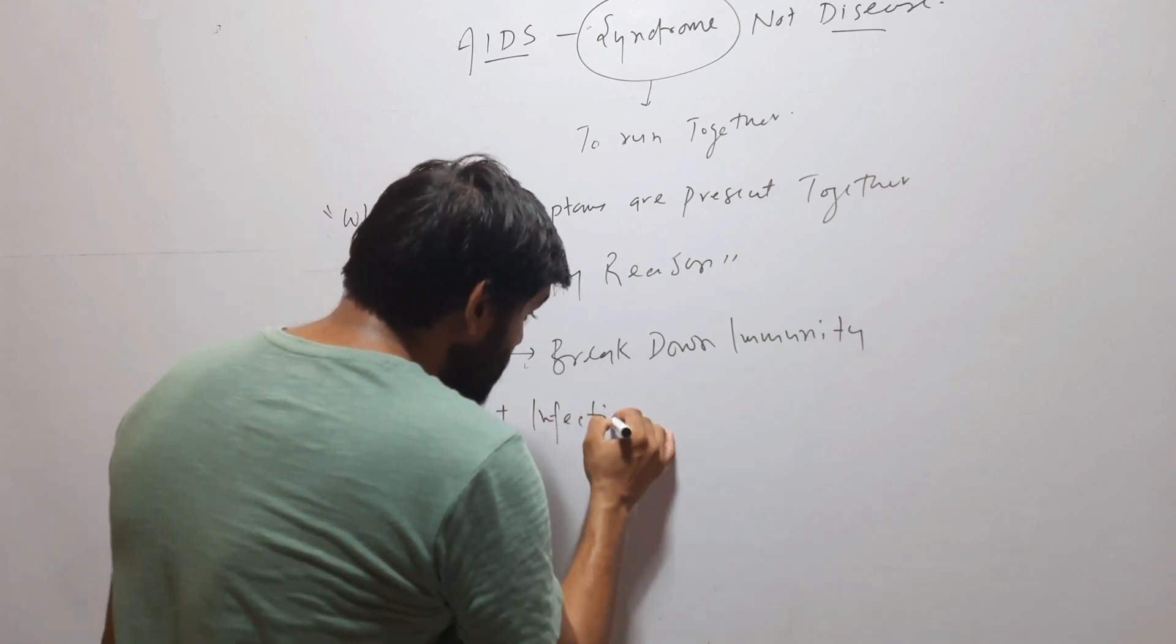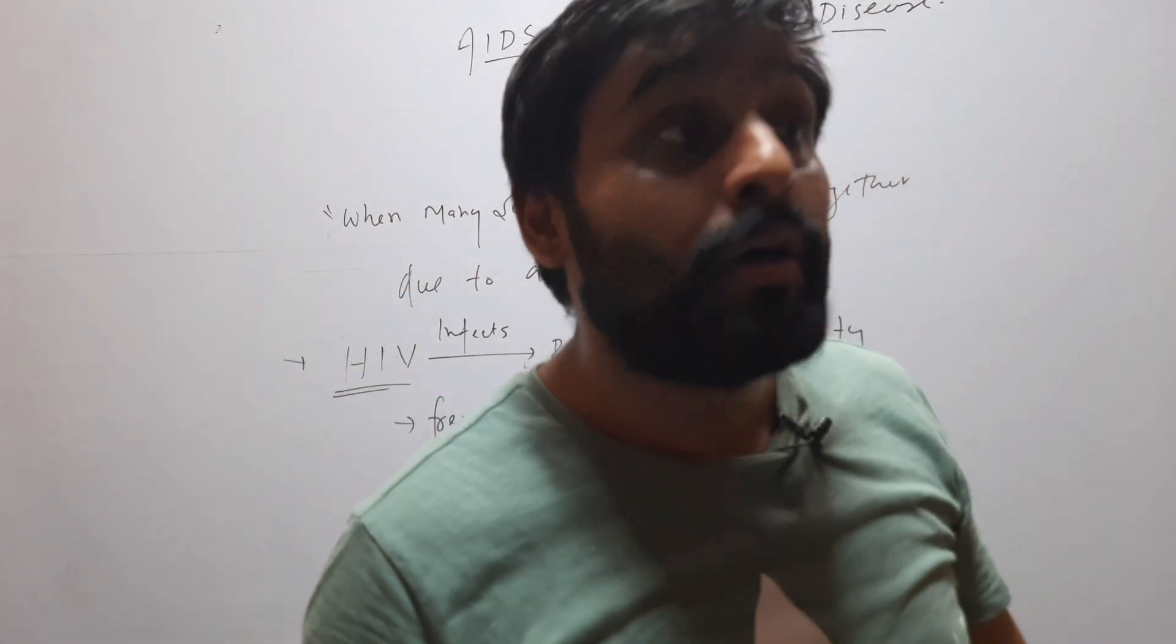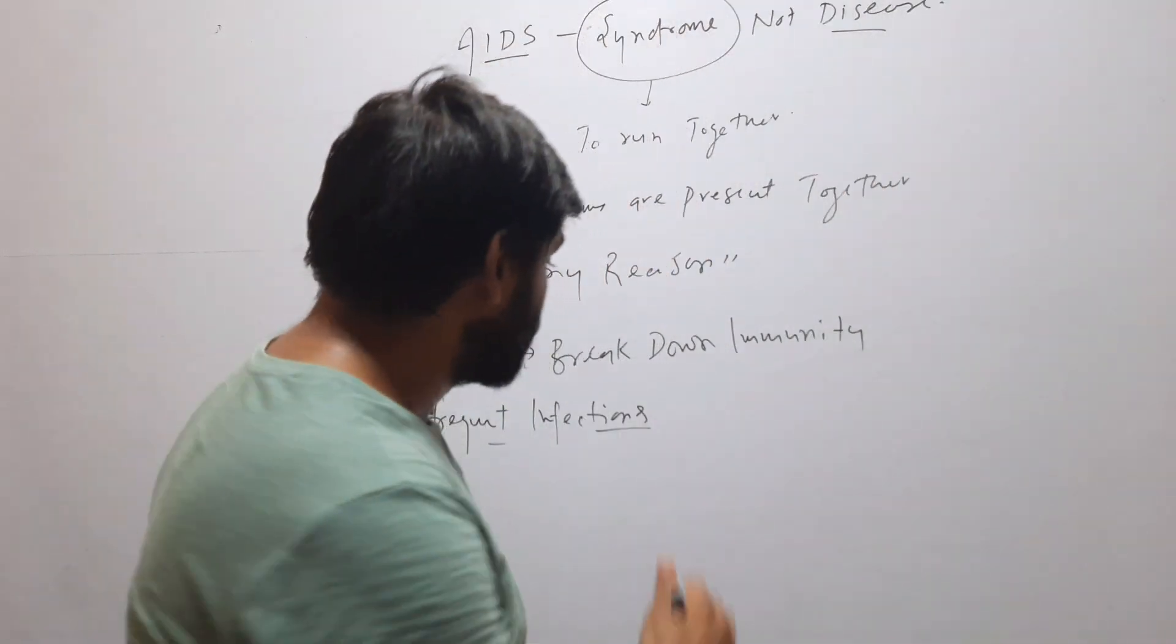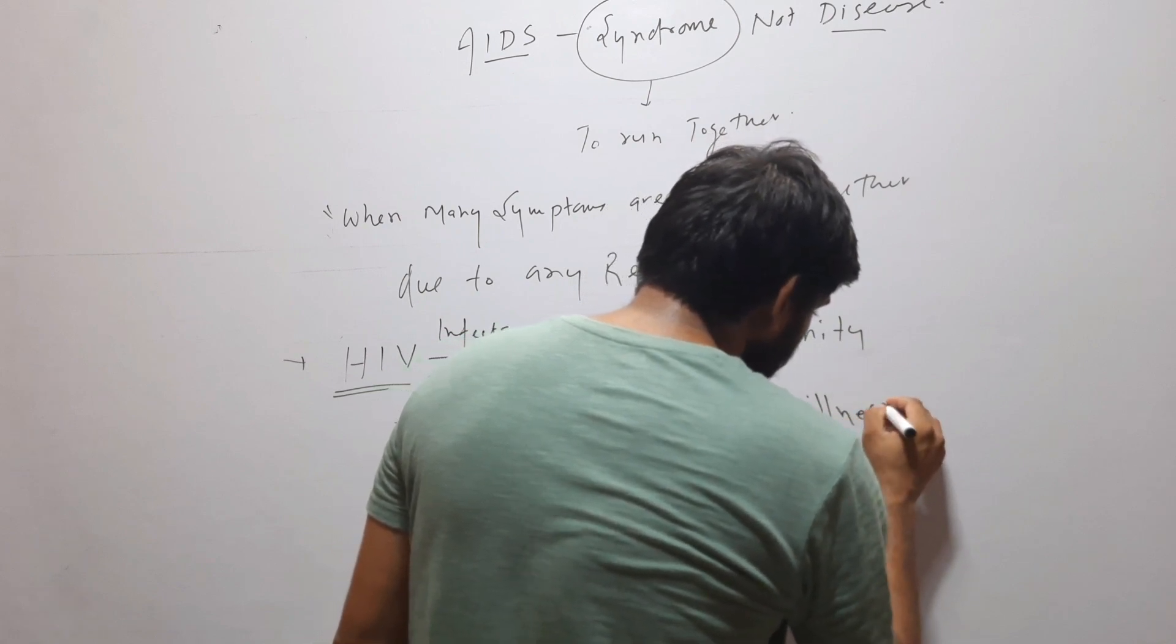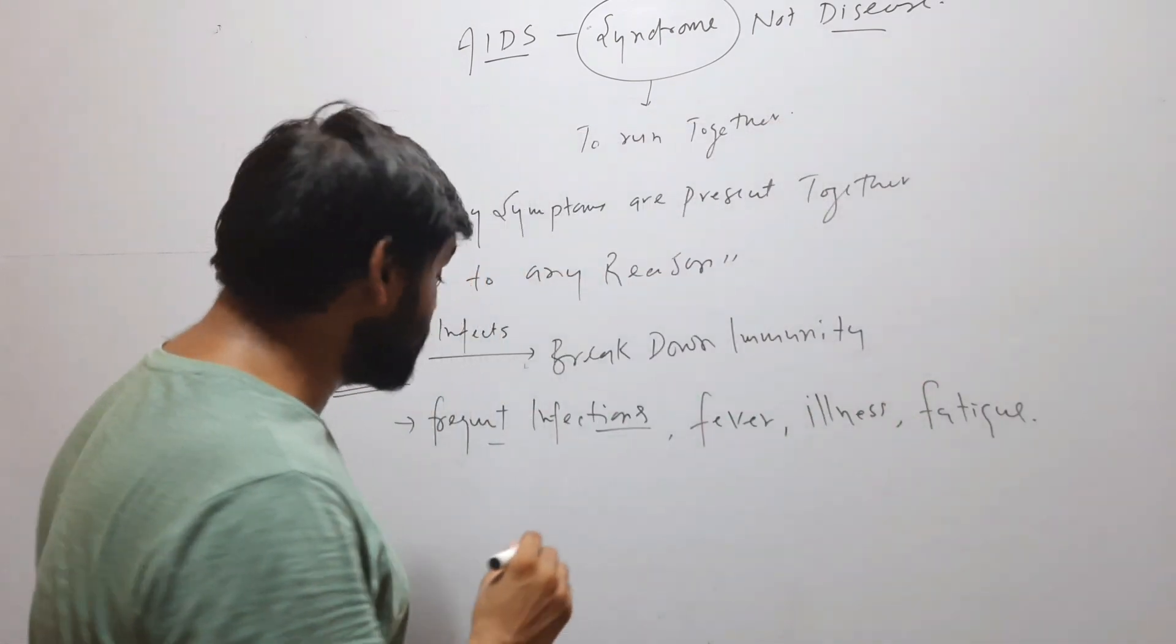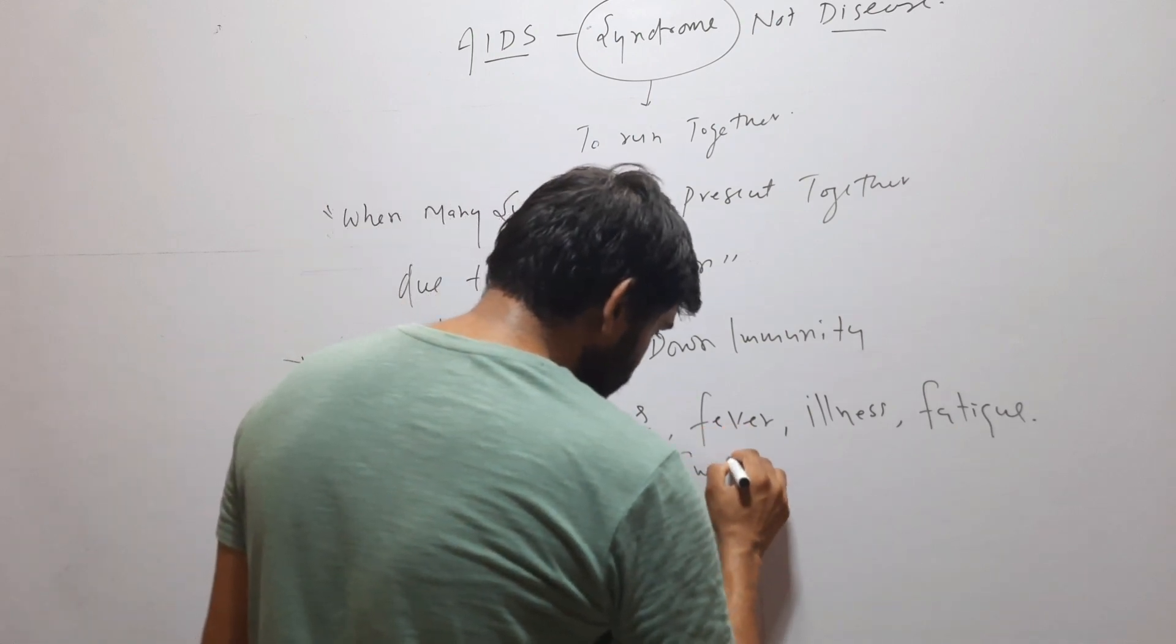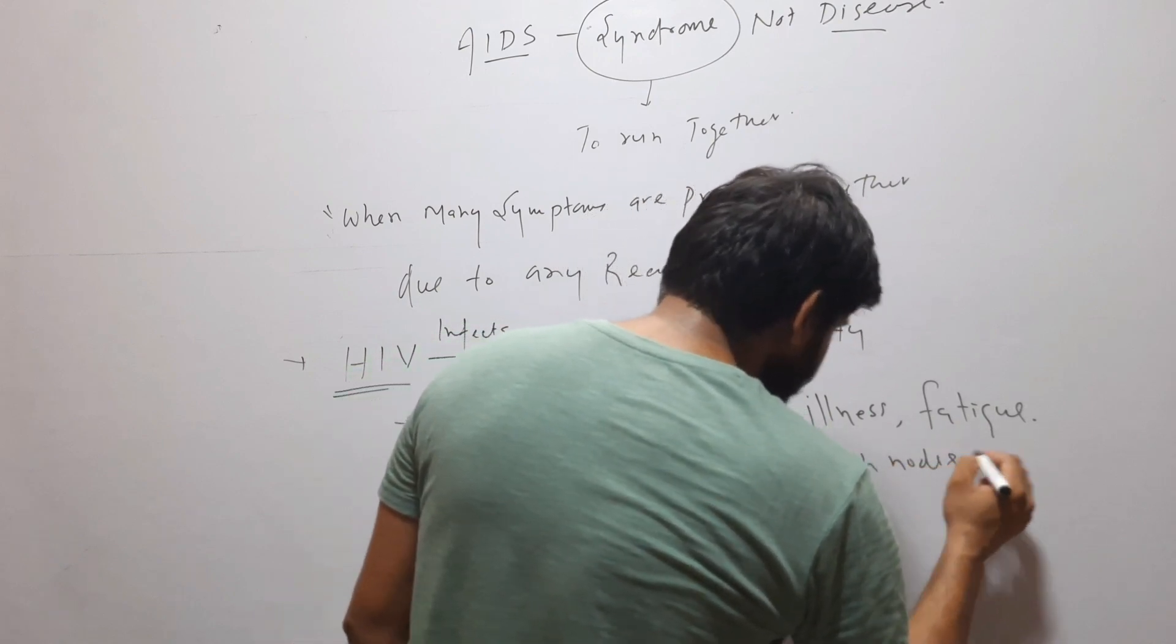Like frequent infections from common infectious agents, for example cold, many bacteria, many viruses. So frequent or easily that person will get infection very easily. Fever, illness, long-term sick, night sweats, and swollen lymph nodes.